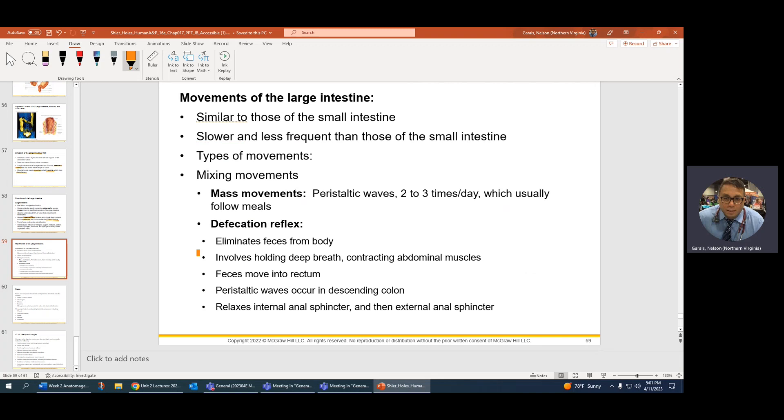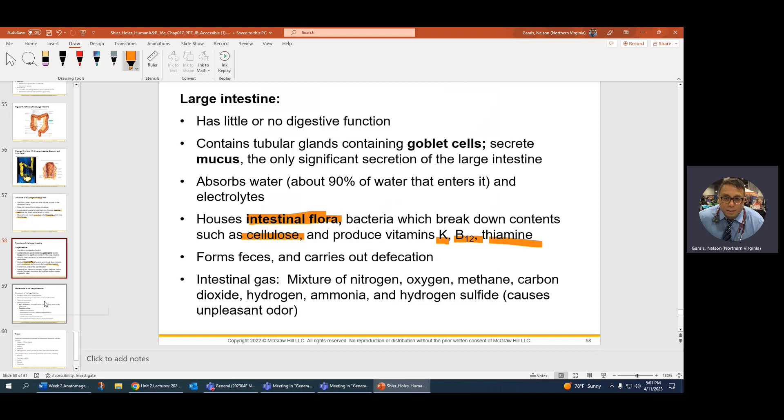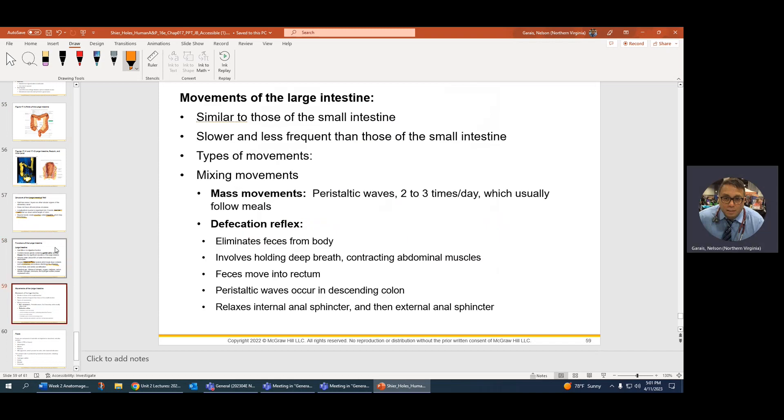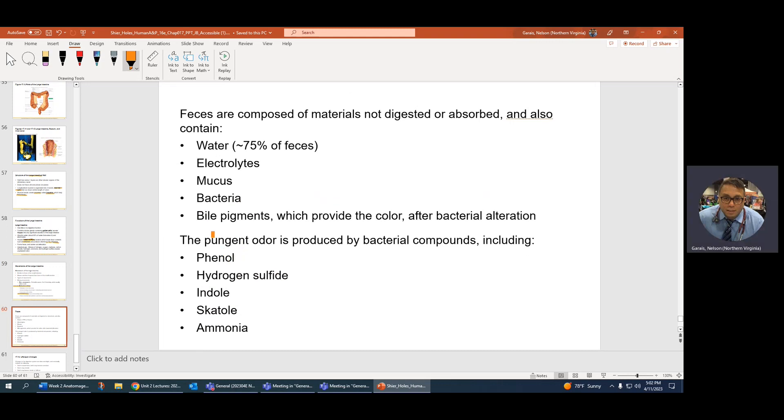Defecation reflex. We talked about it briefly. Briefly. When the feces start getting a lot, so this starts getting distended. So, the autonomic nervous system there senses that it's getting distended. So what will happen? You will loosen up the lower esophageal, not the lower, sphincters, internal and external anal sphincters, and then you will defecate. And, of course, it comes in waves. Water, electrolyte, mucus, bacteria, and bile pigments, we talked all about all of this.